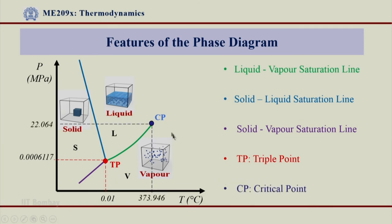The other point what you see is a CP or the critical point, this critical point also is a specific characteristic of water which exists at 22.064 MPa pressure and 373.946 degree centigrade temperature.